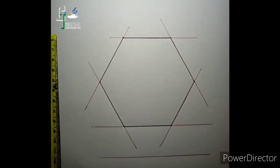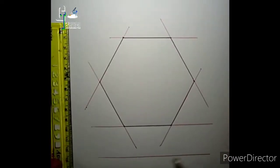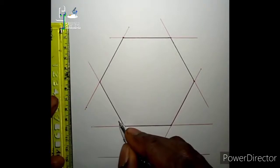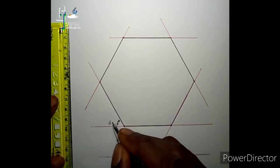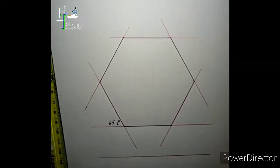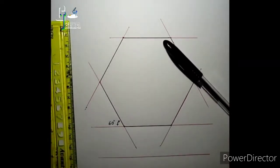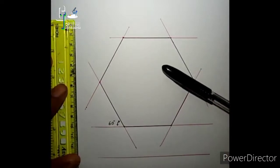And that's a simple way of drawing a hexagon. It's 60 degrees. Thanks for watching, make sure you like this video.